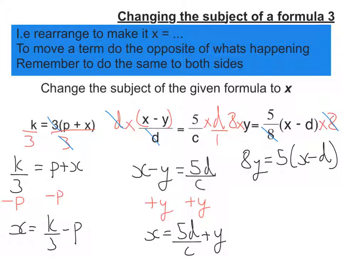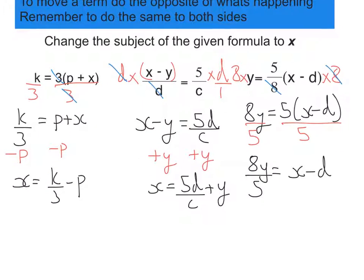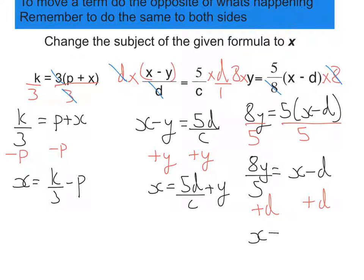Now I need to get rid of that 5 while it's multiplying the bracket, so I do the opposite, which is divide. So that will give me 8y over 5 is equal to x minus d. So all I need to do now is move that d while it's taking away. So I'm going to add d to both sides. I'm going to flip over the equation to get x equals on the left-hand side, 8y over 5 plus d. There's my answer.